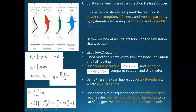The second study deals more with trailing vortices and does that by comparing heaving swimming versus undulation swimming. Heaving is like the tuna, and undulation is like an eel or a scombriform, which is more like a fish — an eel is a very undulating swimmer.